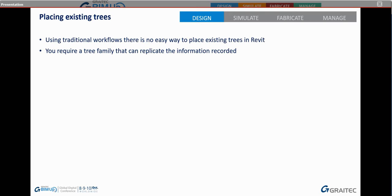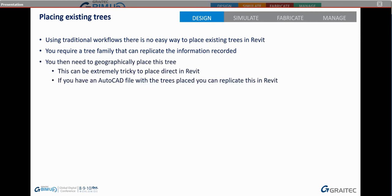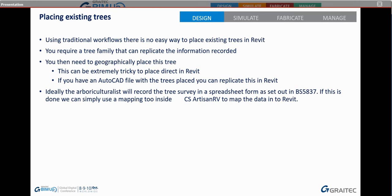There's a lot of data that has to be mimicked in the Revit family, and you need to place trees geographically, which is difficult in Revit. Ideally, the arboricultural consultants will record the tree survey in a spreadsheet as set out in BS5837. If this is done, we can map it using one of the tools in CS Artisan RV. Across your ribbon, we simply have a tab for Artisan. In there, there's an existing tree panel. Clicking the Place Tree button brings up the place existing tree mapping.